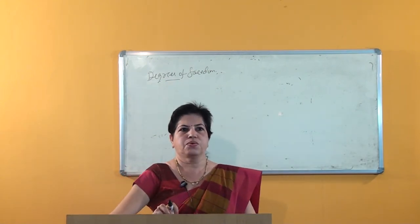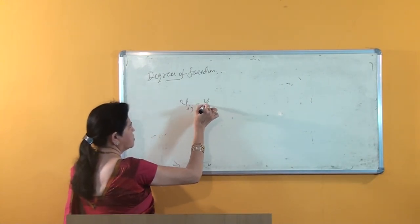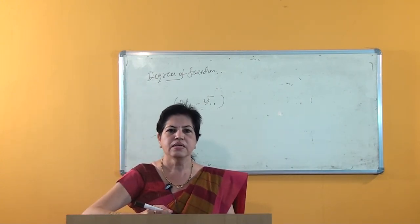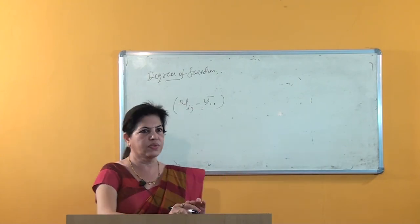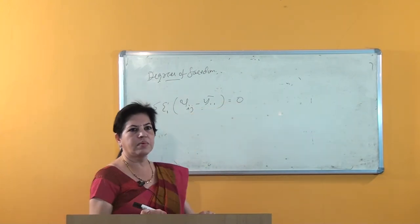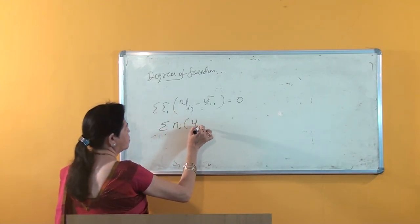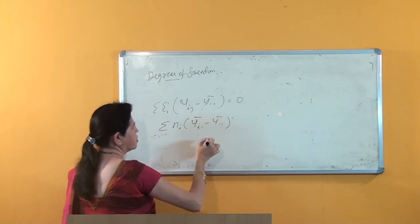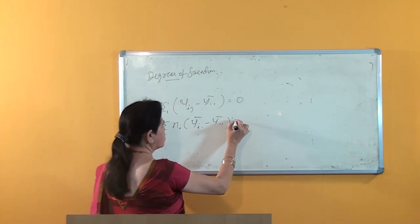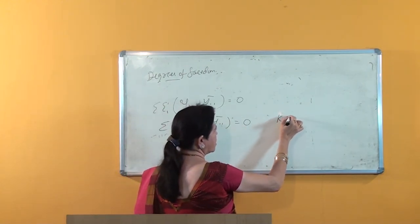Degrees of freedom: The total sum of squares is computed from n quantities of the form (y_ij minus y double-dot bar). The degrees of freedom for this is n minus 1, since one degree of freedom is lost due to the constraint that double summation of (y_ij minus y double-dot bar) equals zero. Similarly, the sum of squares due to treatment uses terms of this form, and due to the linear constraint, the degrees of freedom for treatment is k minus 1.